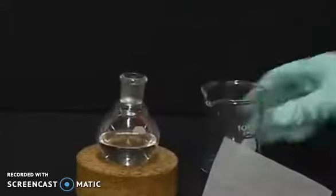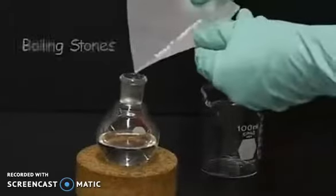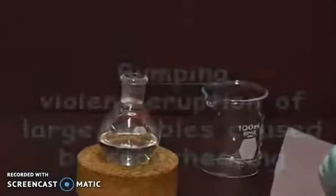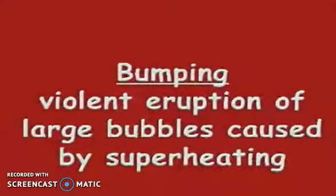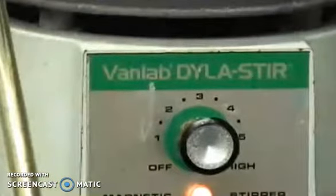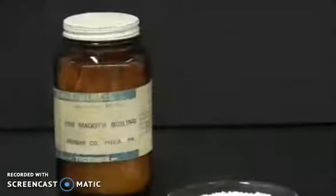The round bottom flask should not be more than half full. Add boiling stones to the solution to avoid bumping—violent eruptions of large bubbles caused by superheating. This results in material loss. Magnetic stirring also allows bumping prevention because the solution is disturbed, breaking up large bubbles.